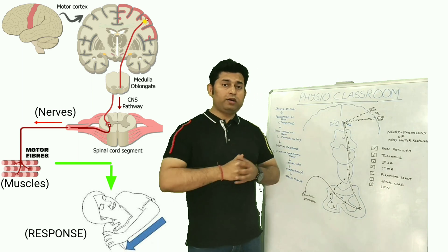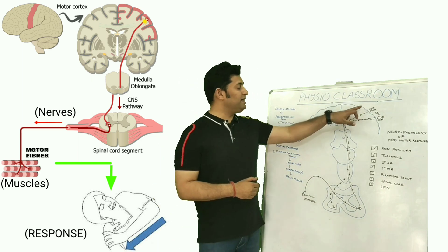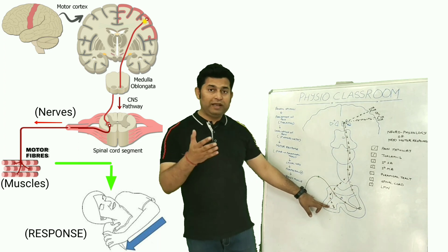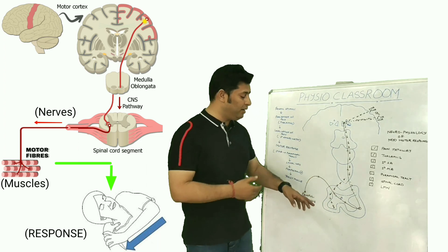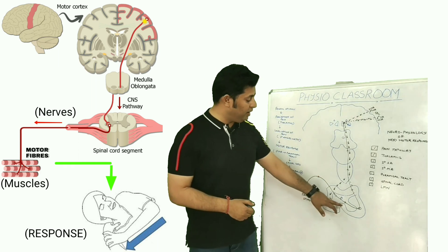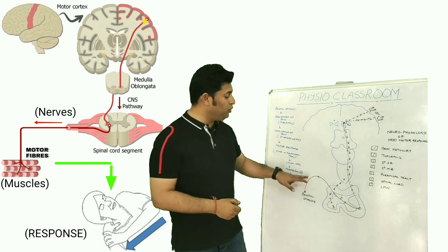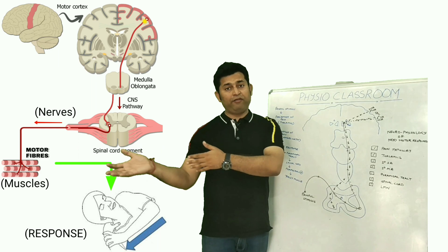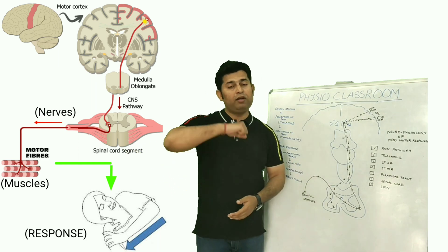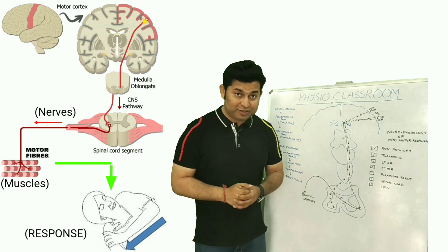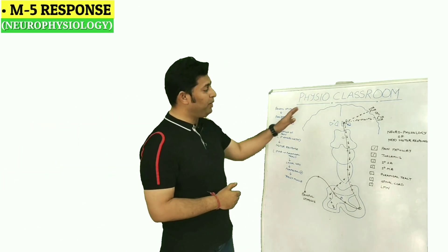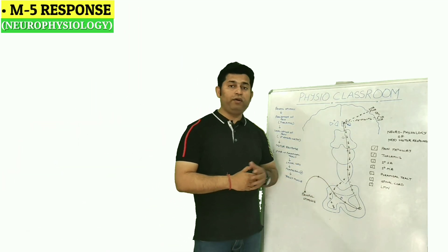this motor response is brought about by the descending motor impulses that have reached the level of the cervical spine, fired the target anterior horn cells, and through the motor nerves have stimulated the muscles involved in the production of that response.